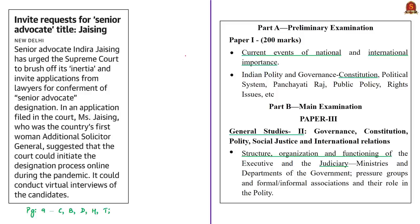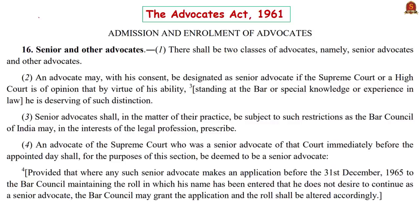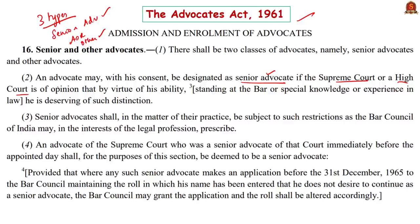The next news article speaks about the conferment of senior advocate status in the Supreme Court. There are broadly three types of advocates in the Supreme Court: senior advocates, advocate on record, and other advocates. According to the Advocates Act of 1961, there are two types: senior advocates and other advocates. An advocate may, with his consent, be designated as a senior advocate if the Supreme Court or a High Court is of the opinion that, by virtue of his ability, he deserves such distinction. Once designated, the senior advocate is subject to restrictions prescribed by the Bar Council of India — for example, they are not entitled to appear in the Supreme Court without an advocate on record, meaning they must always be accompanied by a junior advocate.